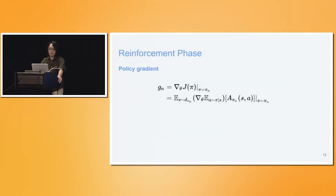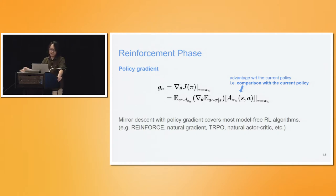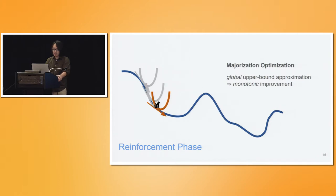Let's talk about the reinforcement phase first, since it's easier to understand. In this phase, it's just doing standard RL — the first-order oracle is the policy gradient, which is essentially the gradient of the objective function we want to minimize, giving us a direction to improve from our current policy. It computes the derivative with respect to the advantage function under the current policy. If we combine policy gradient and mirror descent together and pick the right Bregman divergence regularization, we can recover most commonly used RL algorithms. When mirror descent is used with policy gradient and a smooth enough step size, it constructs a global upper bound objective function such that minimizing it leads to a better policy. Iterating this gives a monotonically improving policy sequence.